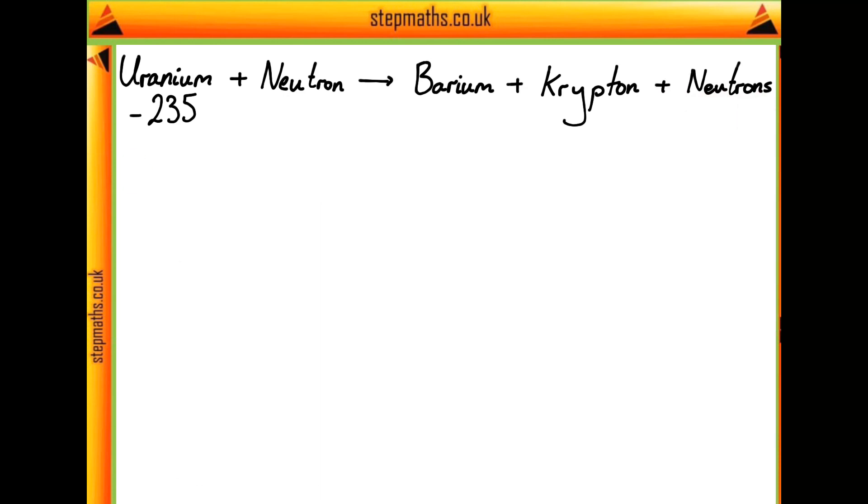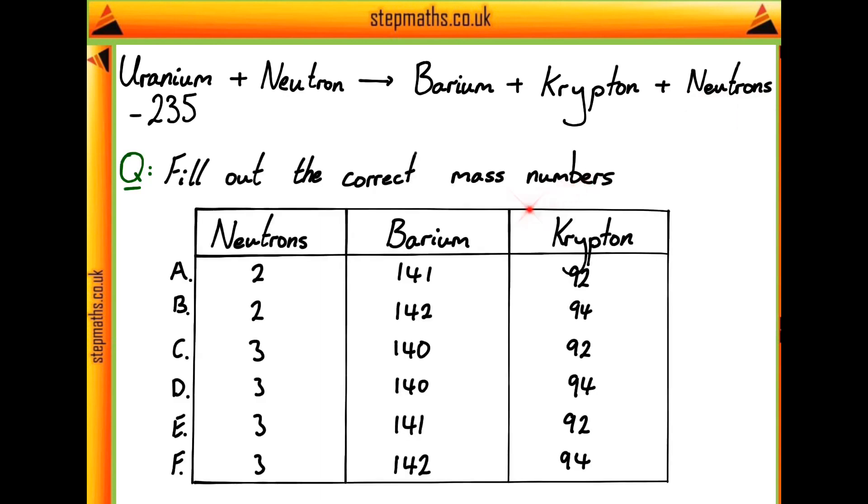The question asks us to fill in the correct mass numbers of barium and krypton, and to find the number of neutrons produced in the products. If you'd like to have a go at this question yourself, please pause the video now. Otherwise, let's get on and have a go at it together.